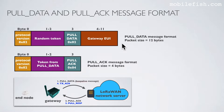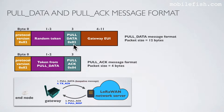This is the pull data packet message format. The packet size is 12 bytes. Byte 0 contains protocol version 2. Byte 1 and 2 contain a random token. Byte 3 contains an identifier — value 2 means pull data. Byte 4 to 11 contains the gateway EUI.